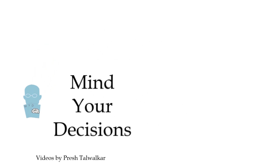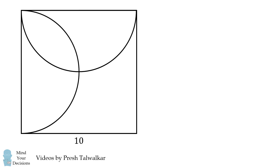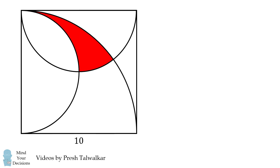Hey, this is Presh Talwalkar and you're watching Mind Your Decisions. Here's a really fun and challenging geometry problem that's been spreading around the internet. Start out with a square with a side length of 10. On one side draw a semicircle, and on an adjacent side draw another semicircle. Now between the two corners of the square draw a quarter circle. The challenge is to solve for the area shaded in red.